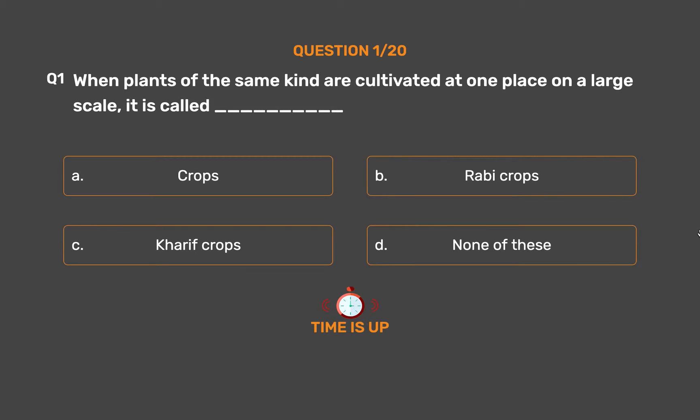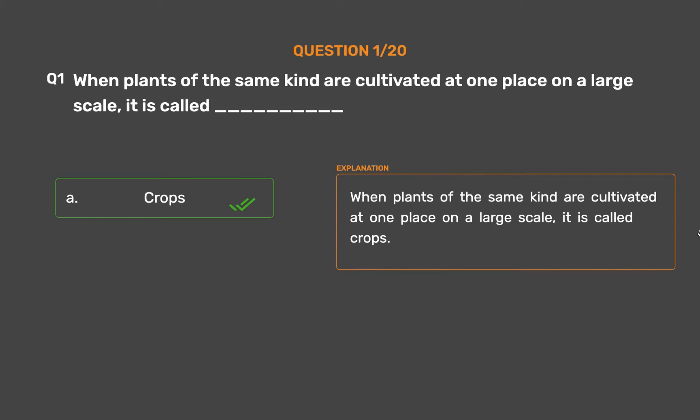The correct answer is Option A: Crops. When plants of the same kind are cultivated at one place on a large scale, it is called crops.